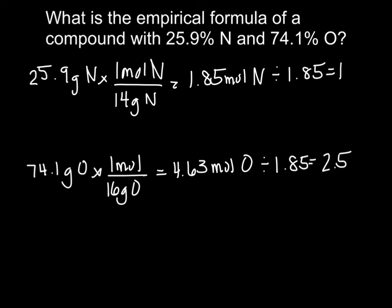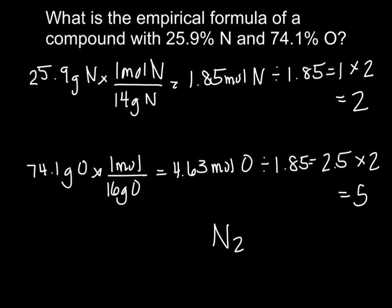I can't round 2.5 to 3 — it's not close enough for the empirical formula. I need a factor to multiply 2.5 by to make it a whole number. Multiplying by 2 gives 5. Since I multiplied oxygen by 2, I also multiply nitrogen by 2: 1 times 2 gives 2. So my empirical formula has 2 nitrogens and 5 oxygens: N2O5.